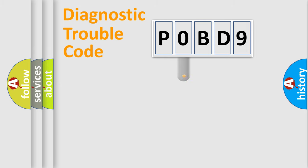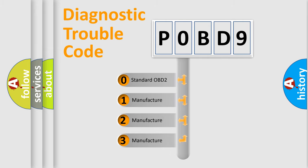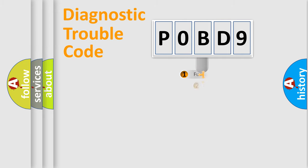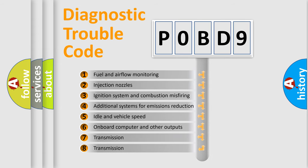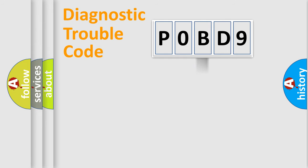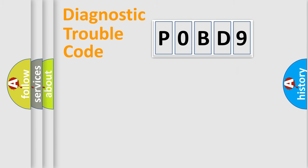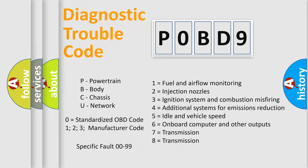This distribution is defined in the first character of the code. If the second character is expressed as zero, it is a standardized error. In the case of numbers 1, 2, or 3, it is a manufacturer-specific error code. The third character specifies a subset of errors. The distribution shown is valid only for the standardized DTC code. Only the last two characters define the specific fault of the group, and this division is valid only if the second character is zero.